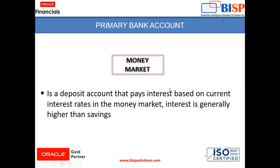Savings accounts generally pay a modest interest rate. The last one is money market — it is a deposit account that pays interest based on current interest rates in the money market, and the interest rate is generally higher than savings. So these are the three types of accounts.